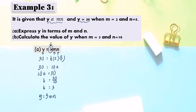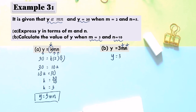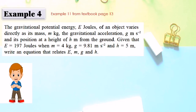Part B: Calculate the value of Y when M equals 3 and N equals 10. Using the equation Y equals 3MN, substitute the values: Y equals 3 times 3 times 10. 3 times 3 is 9, and 9 times 10 is 90. So Y equals 90.